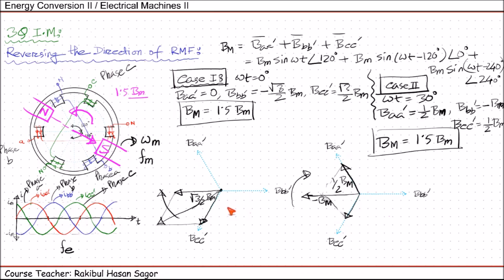This is a very important phenomenon and will play an important role when we change the direction of the rotor of an induction motor. If we can change the direction of the rotating magnetic field, we will be able to change the direction of the rotor as well. By changing any two phases of the three-phase supply, we can achieve this. We will start the rotor construction of an induction motor in the next lecture.